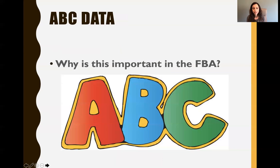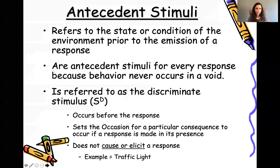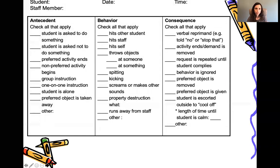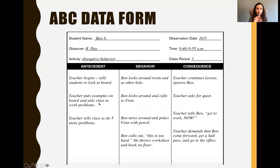ABC data is the other critical portion of a functional behavioral assessment. What is ABC data? Antecedent, behavior, consequence. Antecedent is what happens before the behavior, then this is what you're observing with the behavior itself, and then there's a consequence. We're also going to talk about this more in the behavior class, but I want to give you a taste of it now.